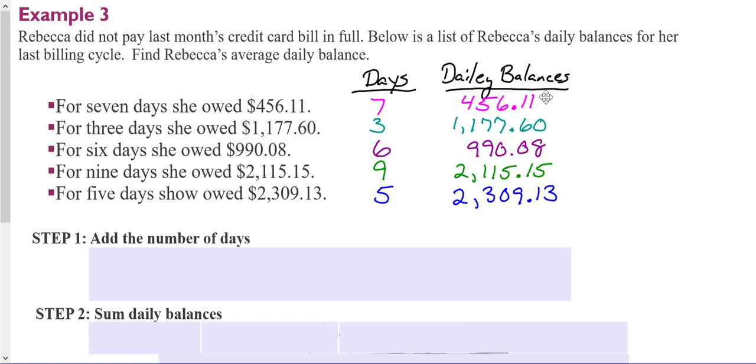If you look, you notice that the daily balances vary. So if we were to do a finance charge based on the balance at the very beginning and we carried higher balances throughout the rest of the month or the billing cycle, you would see that the lender would kind of get shortchanged with the finance charge.